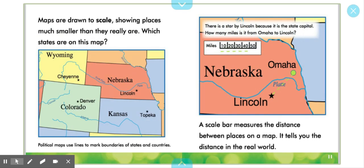Maps are shown to scale, showing places much smaller than they really are. Which states are on this map? Wyoming, Nebraska, Colorado, and Kansas. Political maps use lines to mark boundaries of states and countries.